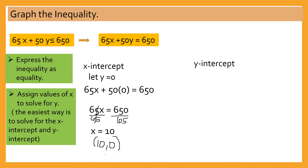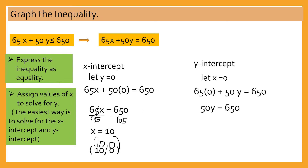Now let's have the y-intercept — let x equal to 0, and substitute x there. So we have 65 times 0 plus 50 times y is equal to 650. Then solve for y: 50y equals 650, and dividing both sides by 50, y is equal to 13. So we have another ordered pair which is (0, 13).